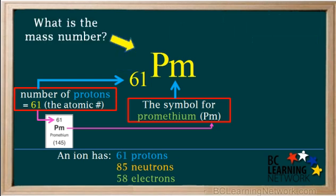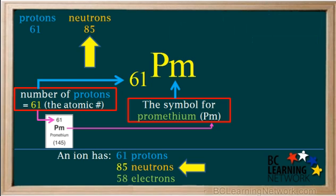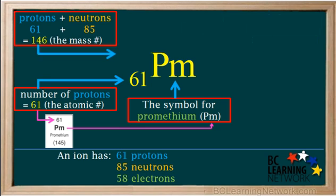Now we need to determine the mass number and write it here on the top left of the symbol. The number of protons is 61, and the number of neutrons is 85. The mass number is the total number of protons plus neutrons, which is 61 plus 85, or 146, which is the mass number, and we write it here.